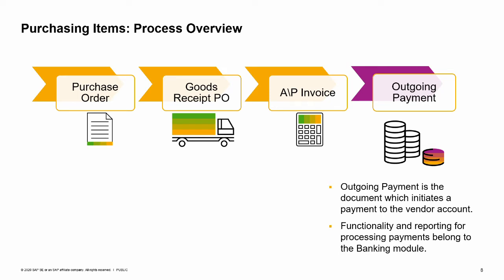The Outgoing Payment is the document which initiates a payment to the vendor account. There are, generally speaking, four ways of sending outgoing payments: cash, checks, credit cards, and bank transfers.